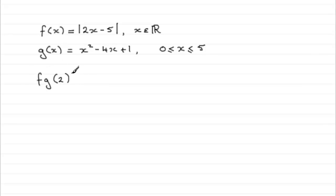And so we've got to find fg of 2, the composite function. So what is this going to equal? Well, it's going to be f of, and I'll put this in square brackets, of g of 2.